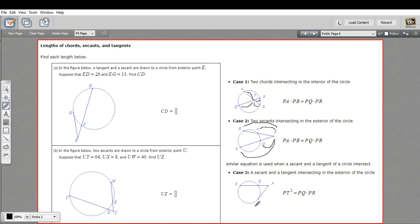And the third case is where you have a secant line and a tangent line, and they intersect at some point outside the circle. In this case, we take the length from this point of intersection to the point of tangency, and you square it. And that equals this outside portion of the secant line times the whole length here. So three different cases, three different formulas to apply.